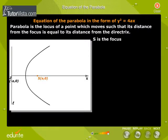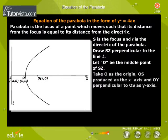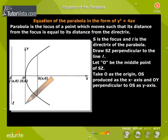S is the focus and L is the directrix of the parabola. Draw SZ perpendicular to the line L. Let O be the middle point of SZ. Take O as the origin, OS produced as the x-axis and OY perpendicular to OS as y-axis.